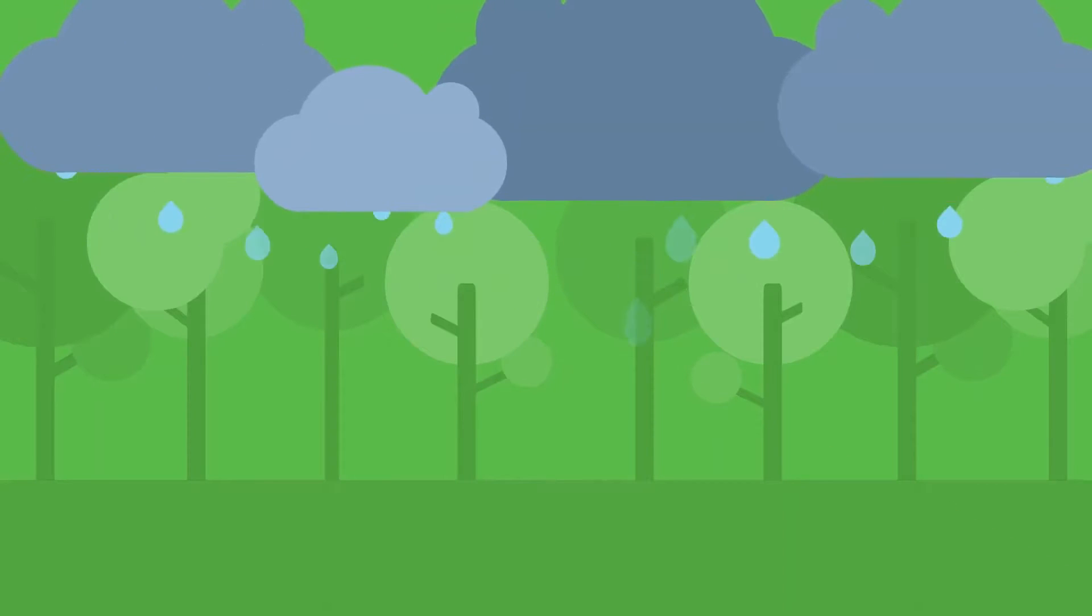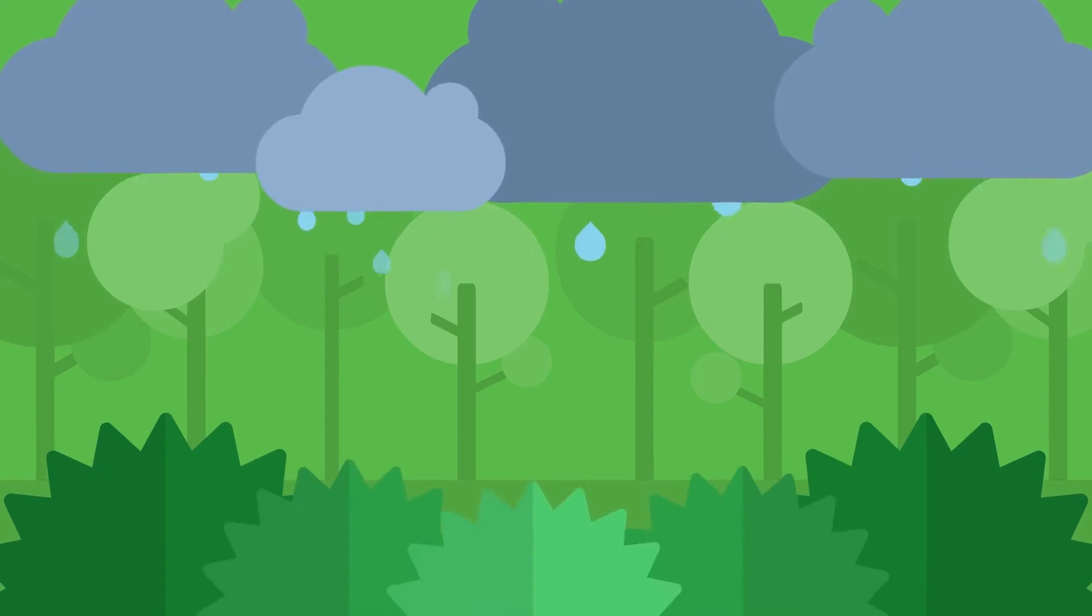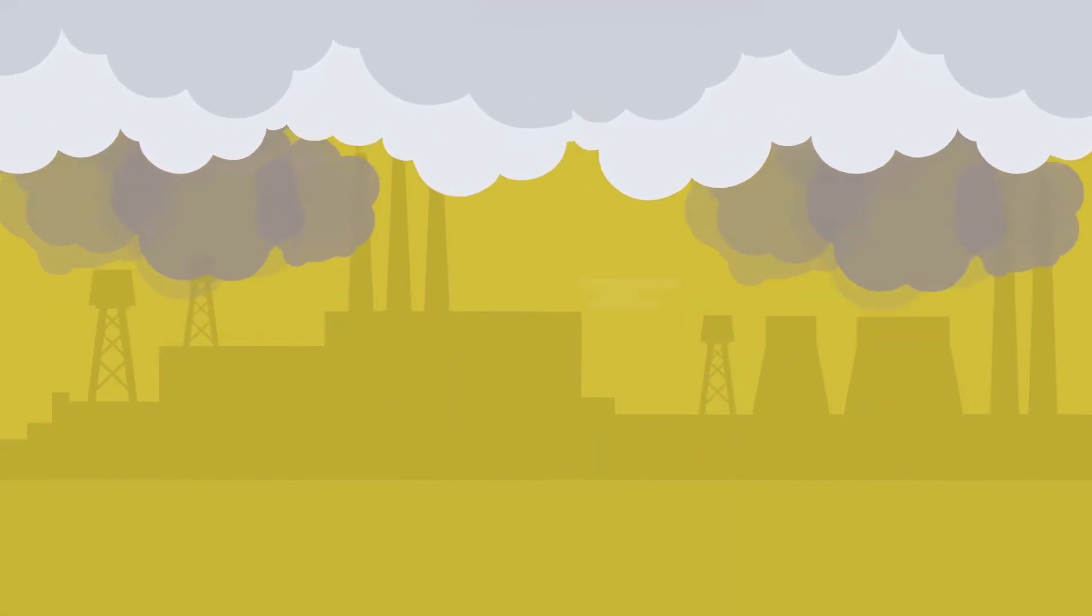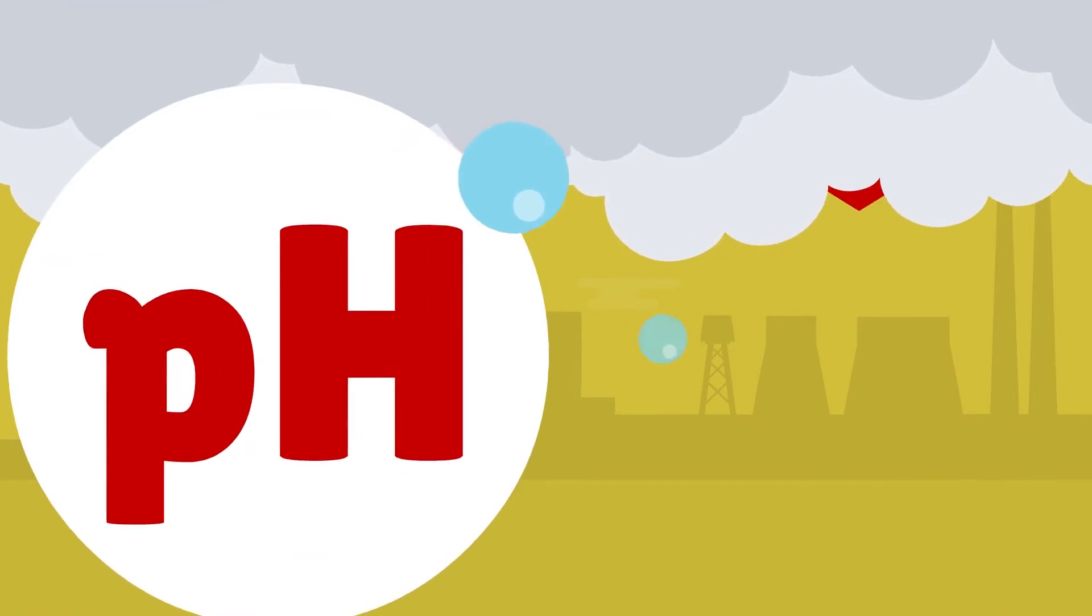Usually, rainwater has a slight acidic reaction, but if a large amount of acid oxides enter the air, the water reacts with them and its pH level decreases.